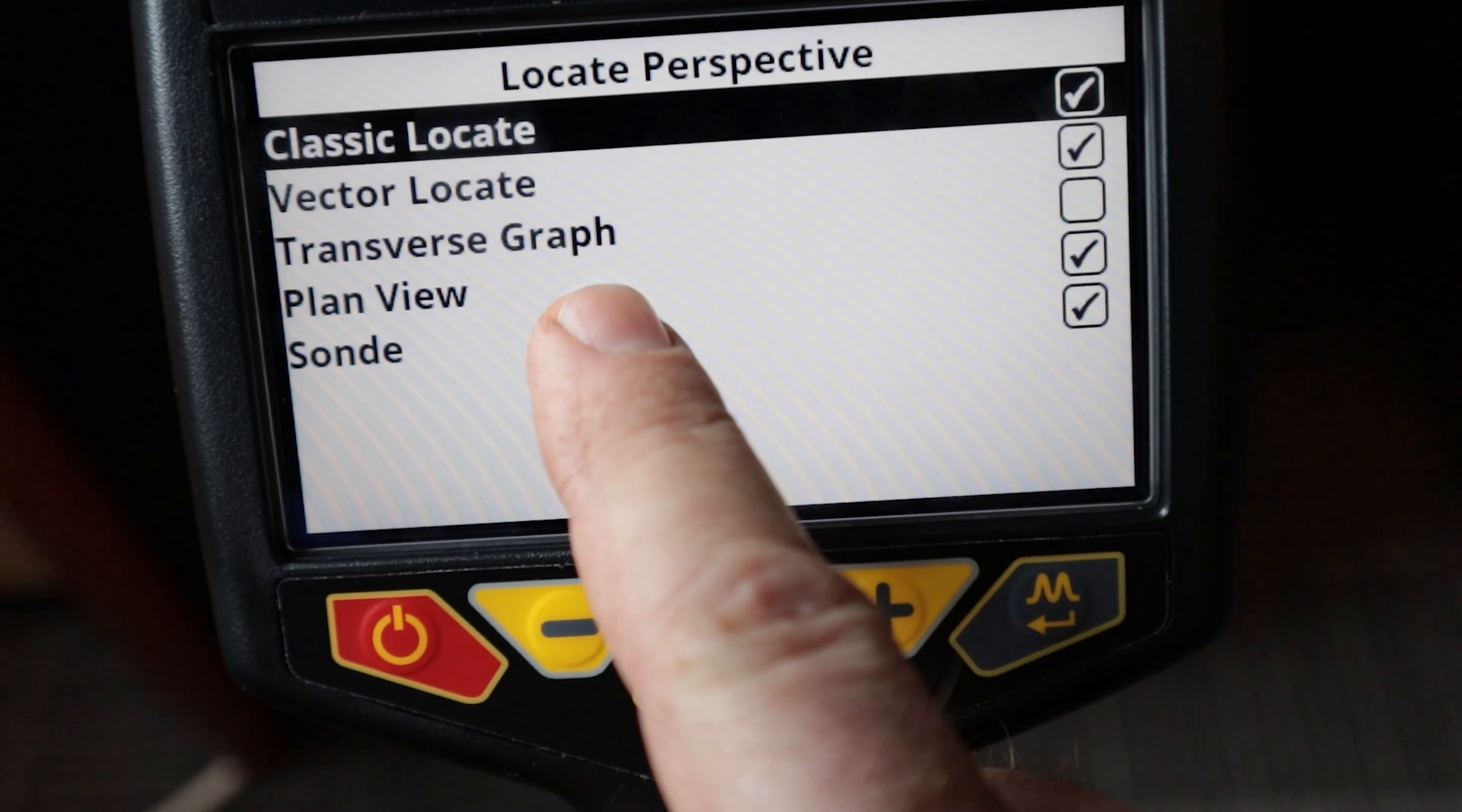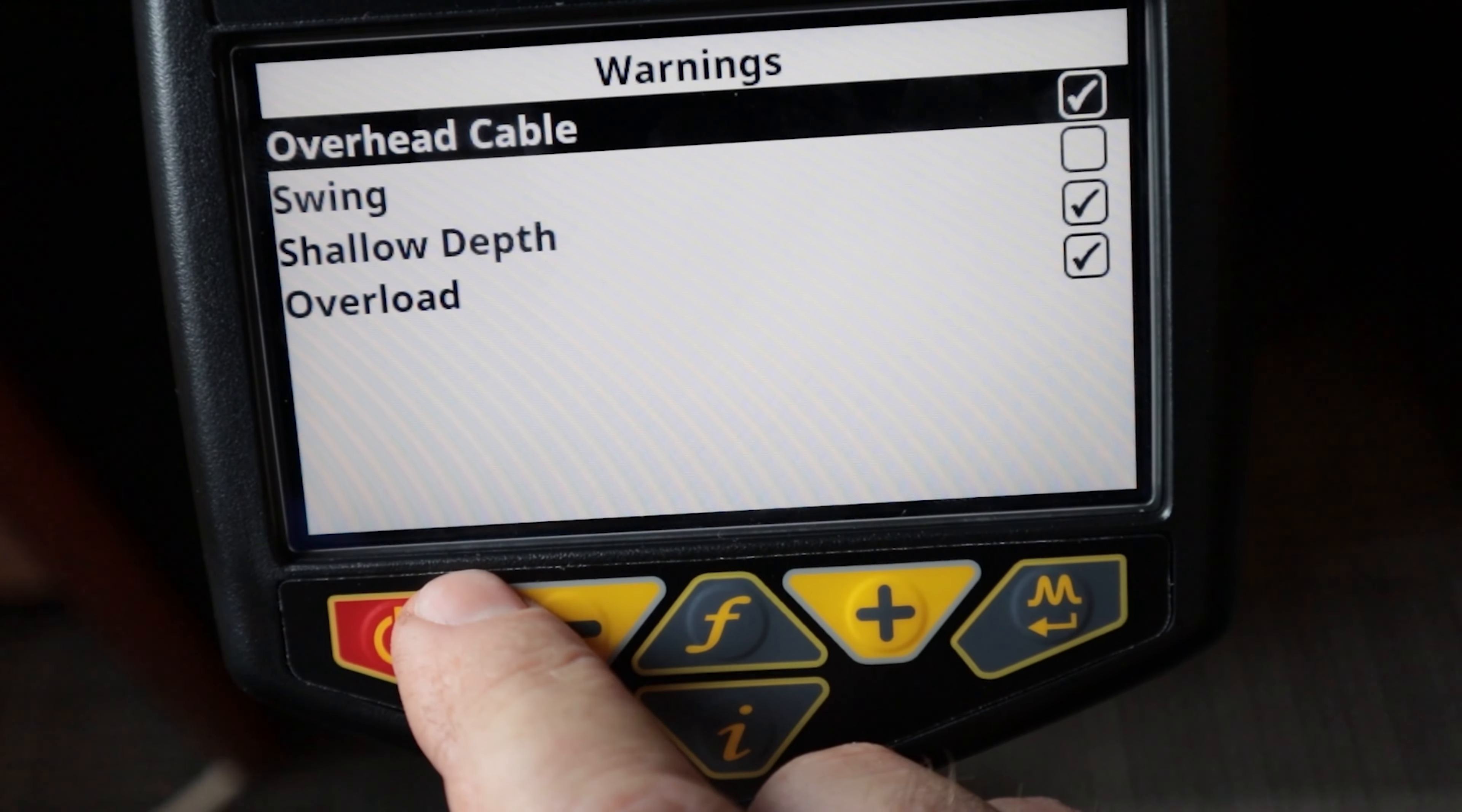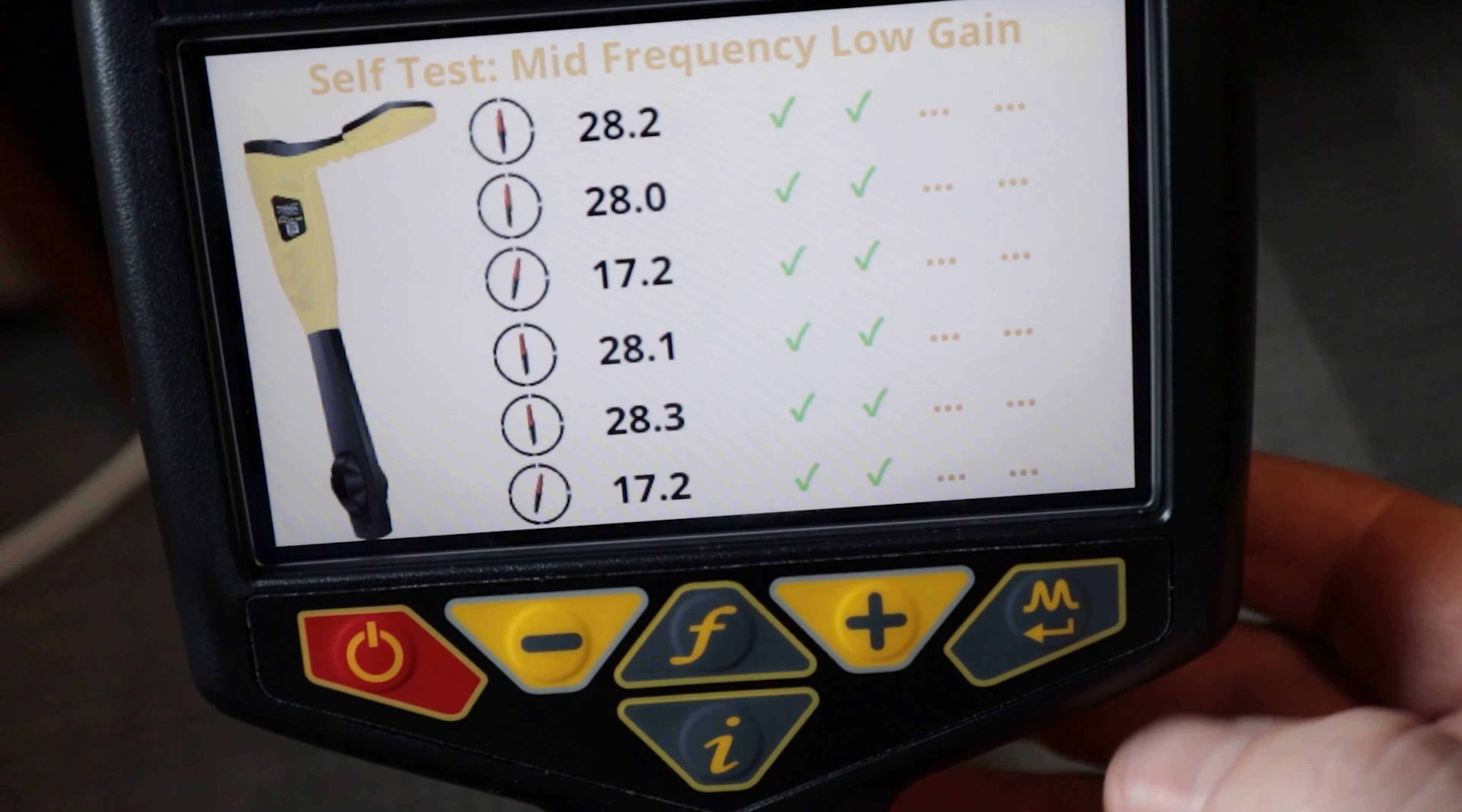Transverse graph basically gives us a graph of our peak and null on screen as you wave it back and forth and I don't typically use transverse graph so I just turn that one off. Down here we have our desired depth I can push the enter button and go ahead and change that. Warnings is another one I can go into and I like to have my overhead cable on, my shallow depth, and my overload but the swing warning I turn off because I know well enough not to swing this around. The last thing we get into here is a self test.